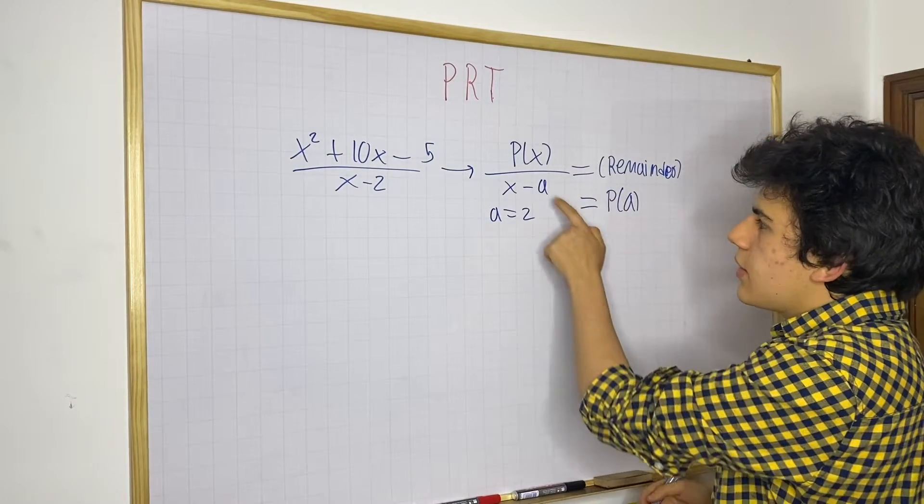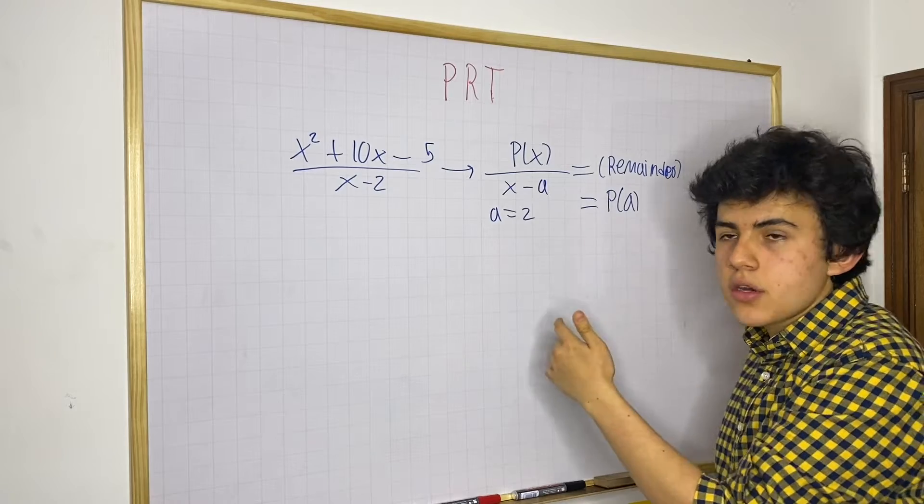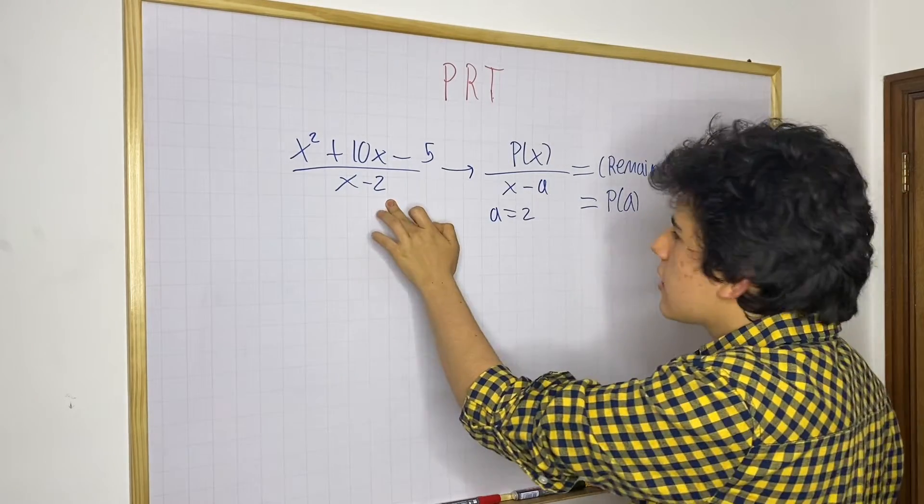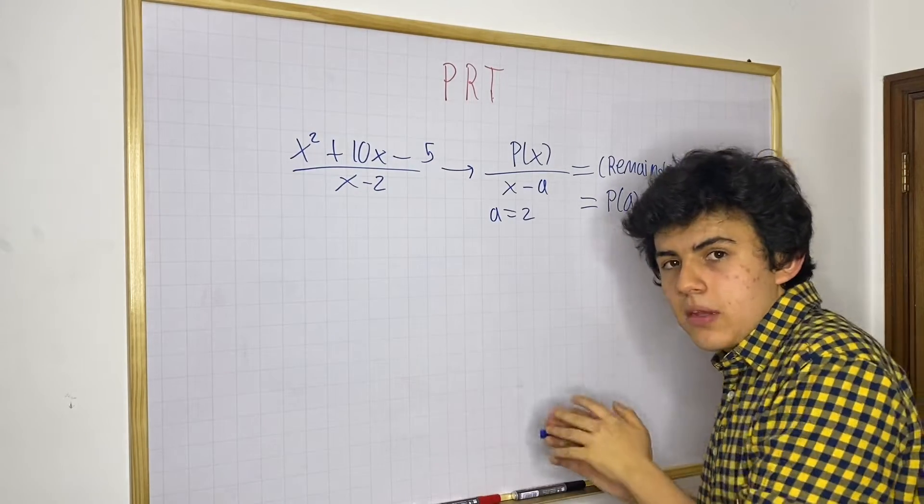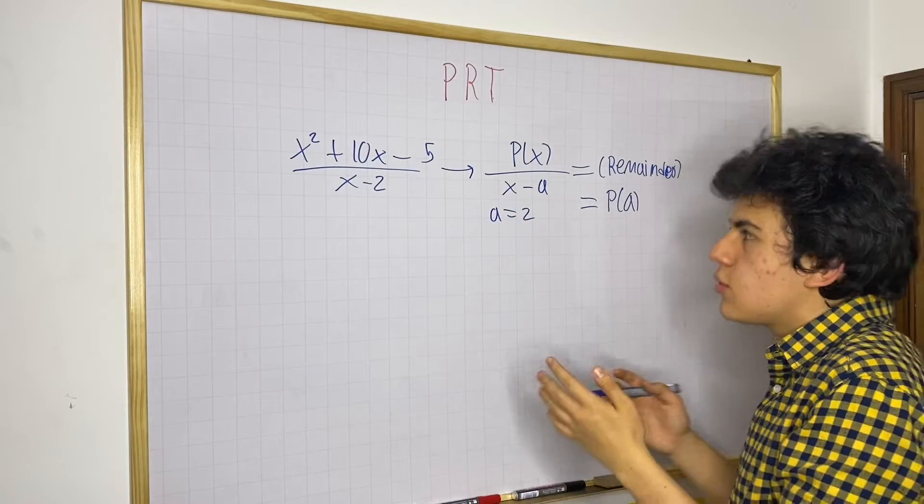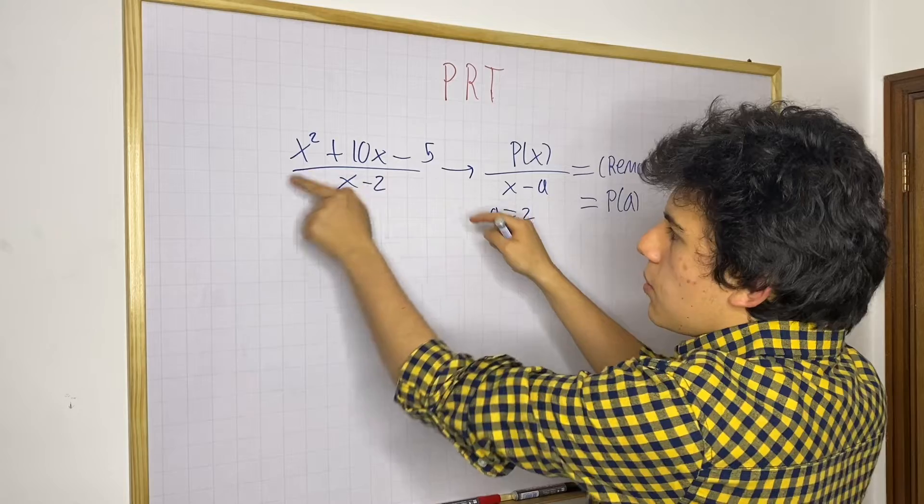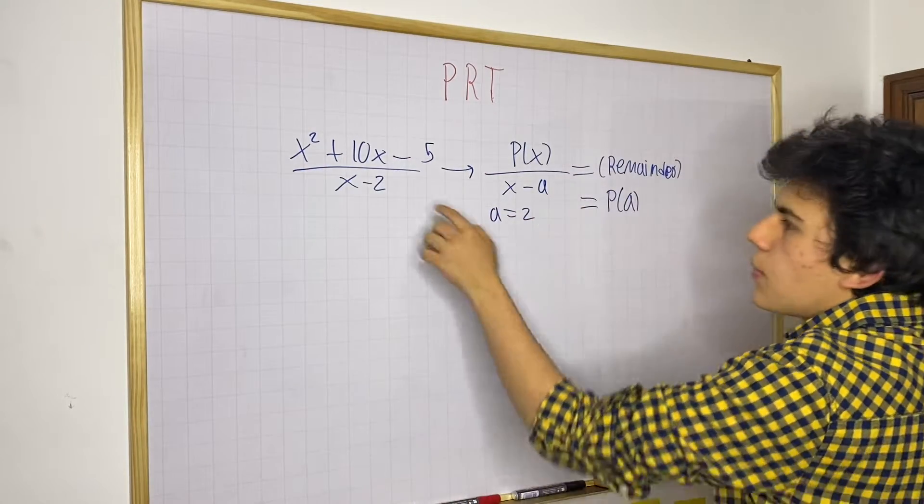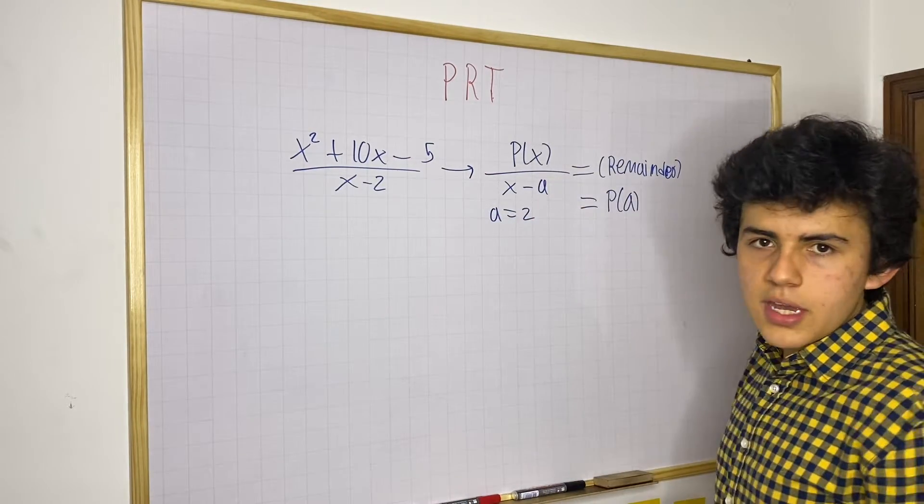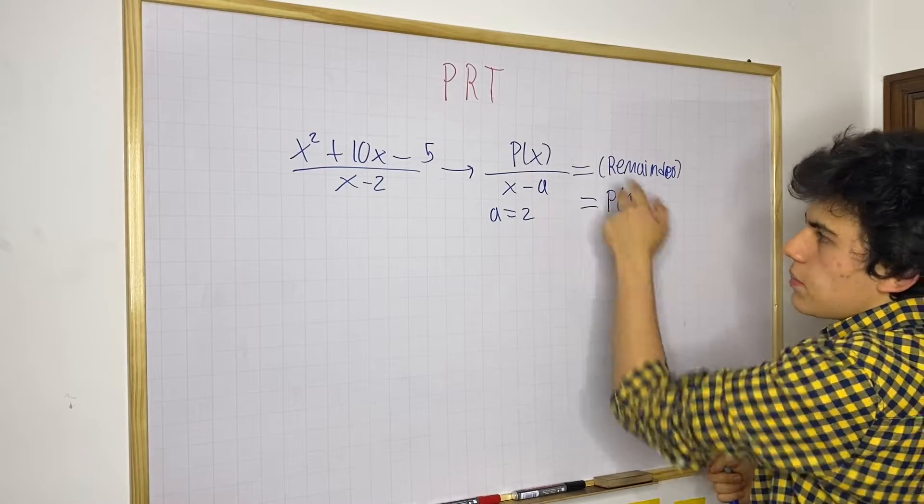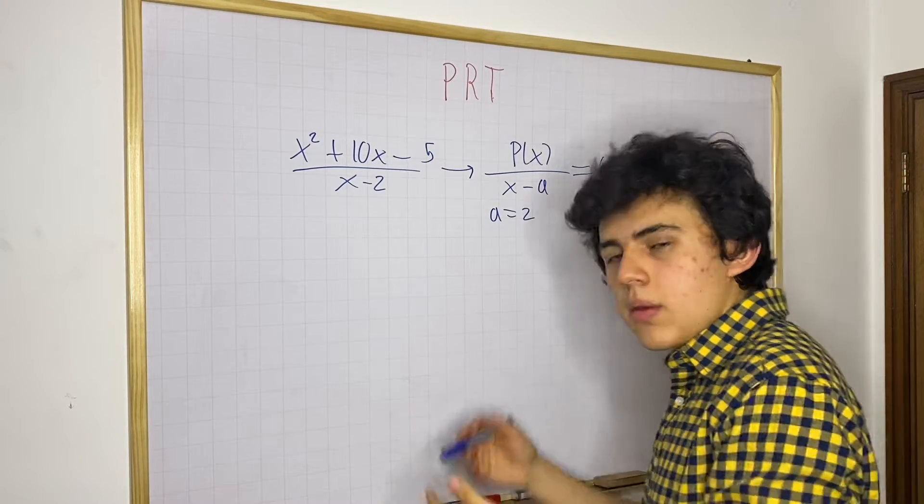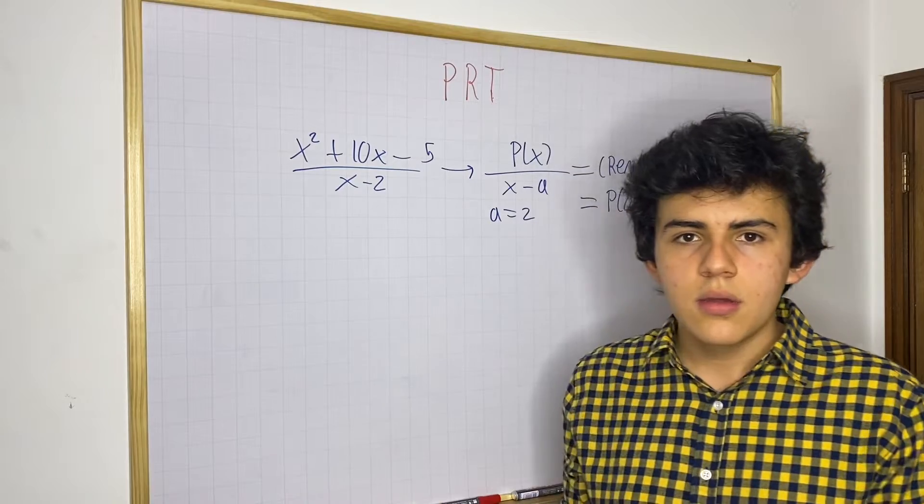If you have a polynomial that is being divided by a linear term x minus a, in this case x minus 2, the remainder of this division is going to be equal to if you evaluate the polynomial that you have on top with this value as an input. It's pretty simple. For a polynomial p of x divided by x minus a, the remainder is going to be p of a.